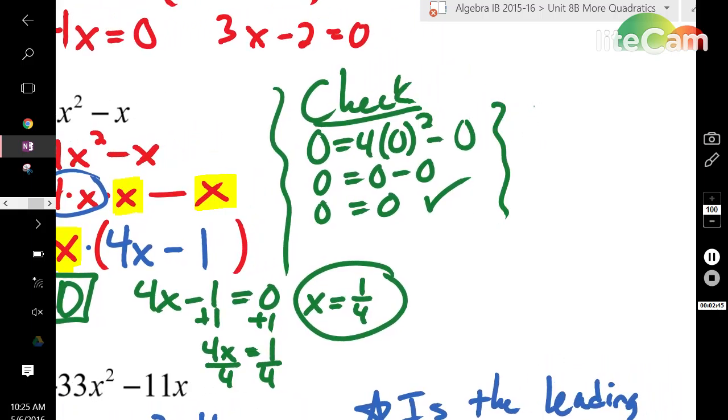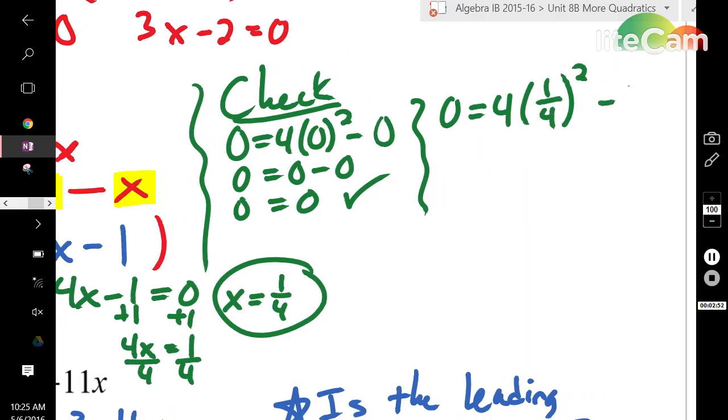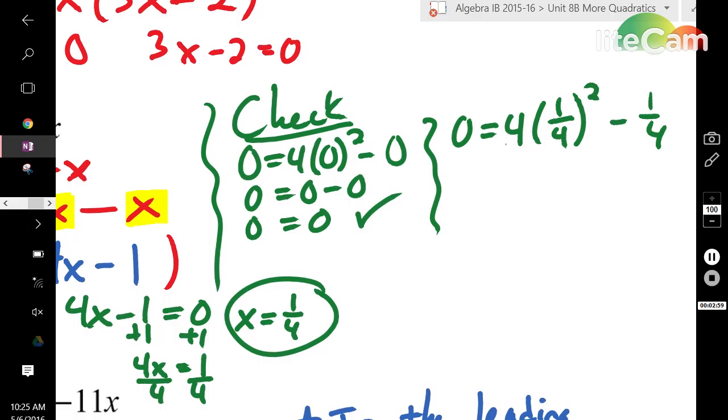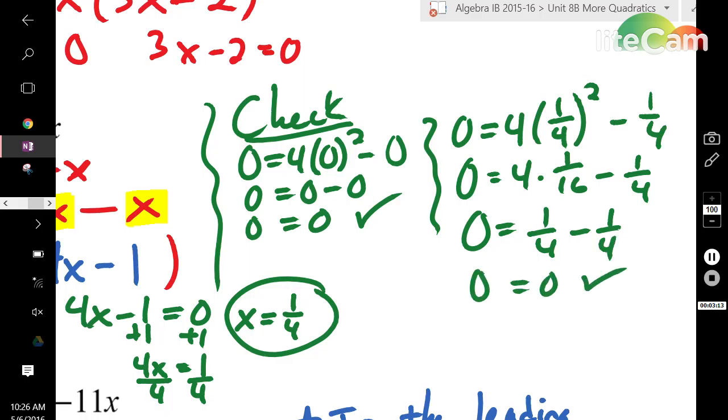And the second one, you do 0 equals 4 times 1 fourth squared minus 1 fourth. So, 1 fourth squared is going to be 1 sixteenth. 4 times 1 sixteenth is 4 sixteenths or 1 fourth. And 1 fourth minus 1 fourth is 0. So, this one also checks out. So, if you just want to see if they're right without having a teacher there next to you, you can always plug it back in to see if it equals 0.